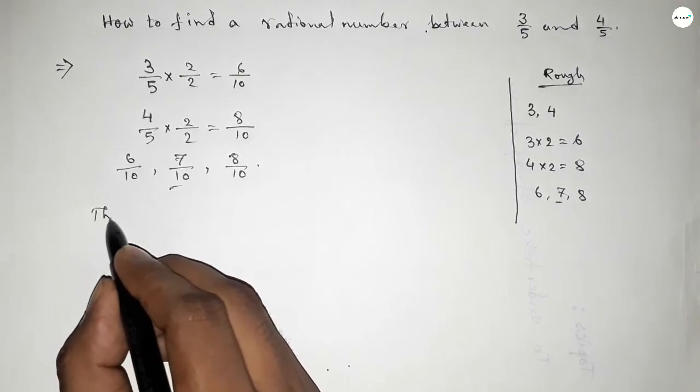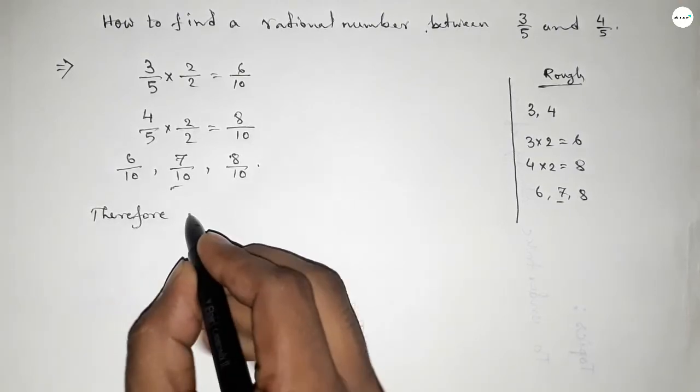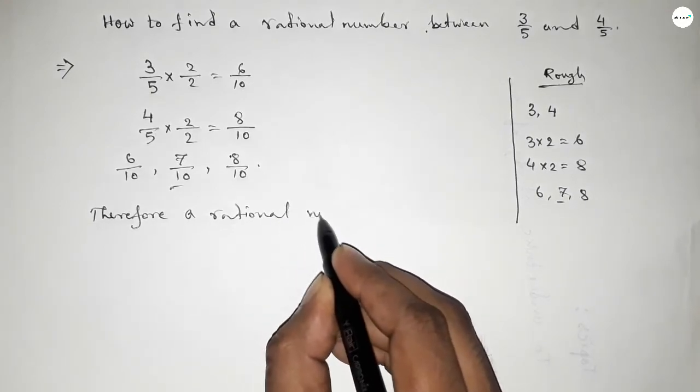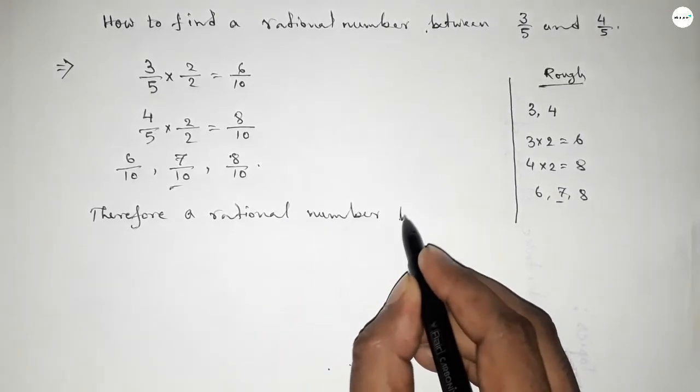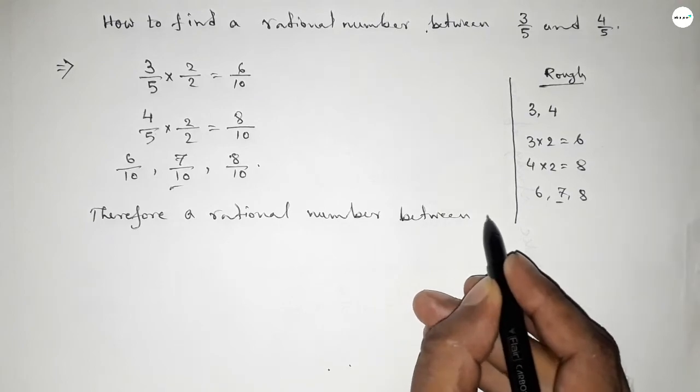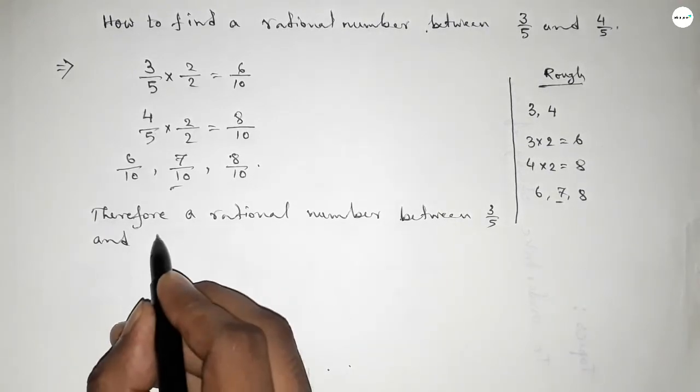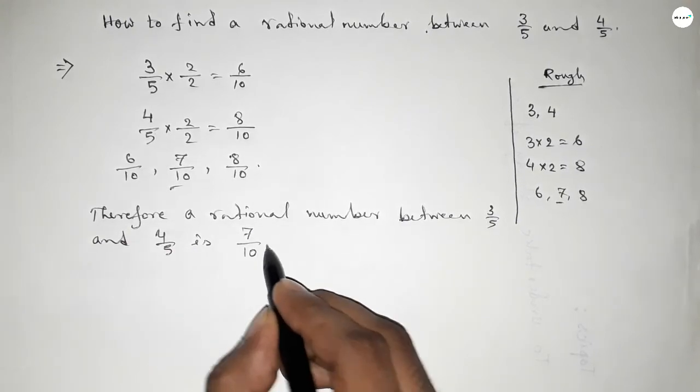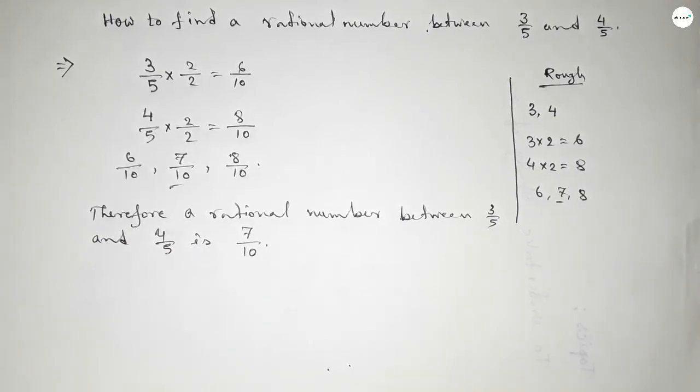Therefore, the required rational number between 3/5 and 4/5 is 7/10. This is the process to find a rational number between 3/5 and 4/5. Thanks for watching.